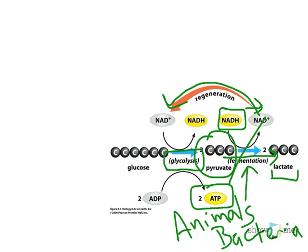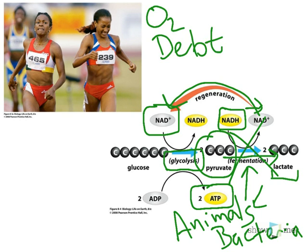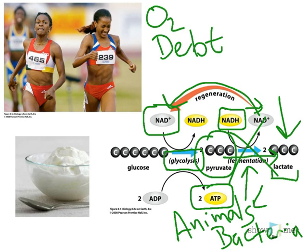That keeps the glycolysis pathway active and allows a few ATP to be harvested. If fermentation did not happen, once all of the NAD was used up by glycolysis, the cell would have no way to get energy. This lactic acid fermentation occurs in animals — during strenuous exercise, your muscles use up oxygen faster than your blood can supply it, so the muscles go into oxygen debt. The buildup of lactic acid or lactate causes muscles to burn after exercise. Some bacteria can also do this, which is what happens when we add bacteria to milk and get yogurt — the lactic acid causes milk proteins to denature, clump together, and turn solid into yogurt.